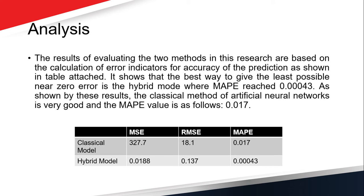In terms of analysis, the results of evaluating the two methods were computed based on MSE, RMSE, and MAPE. It is clearly shown that the hybrid model achieves the least possible near-zero error, reaching an error of 0.00043. The classical artificial neural network method yields a value as high as 0.17, confirming the significant advantage of the hybrid approach.